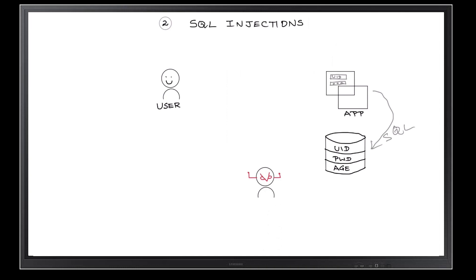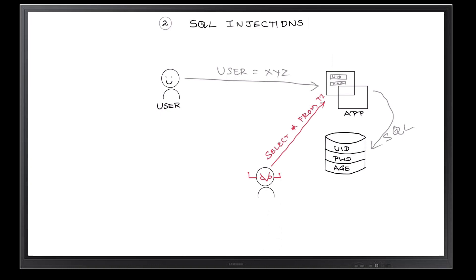As a legitimate user, you would be passing your username and password. The app expects you to enter the username and password. But the same username field can be abused by hackers to pass an SQL query — something like 'SELECT * FROM table_one'. If the app is not built with the right level of user input validation, then the SQL query could end up returning all the records in that database, which means you could get to know all the usernames and their attributes.